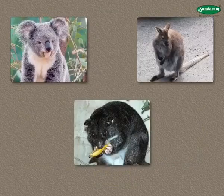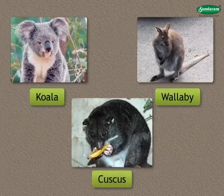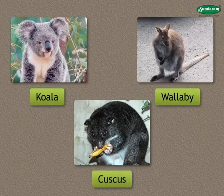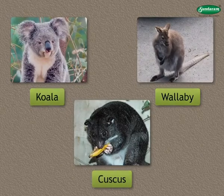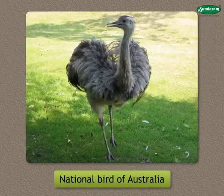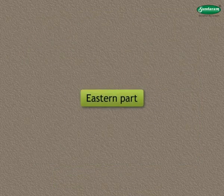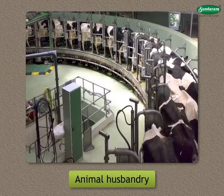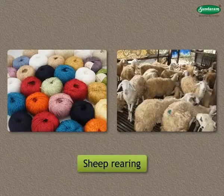Similarly, animals like koala, wallaby, couscous, etc. are found in this continent. Emu is the national bird of Australia. In the eastern part of the continent, animal husbandry is the main occupation. The wool is mainly produced through sheep rearing.